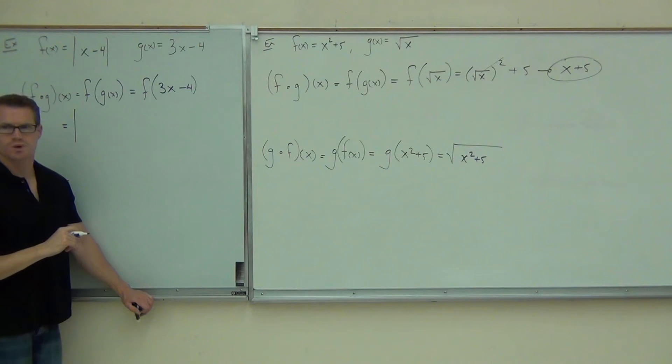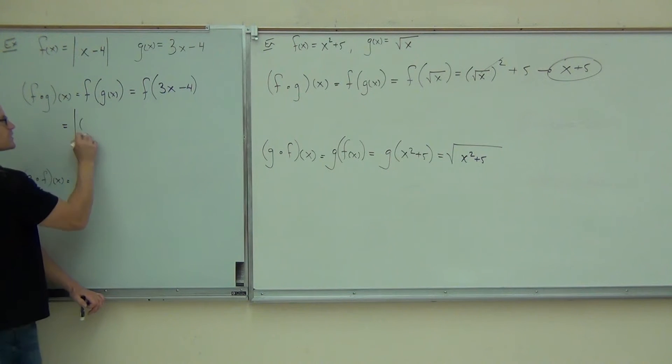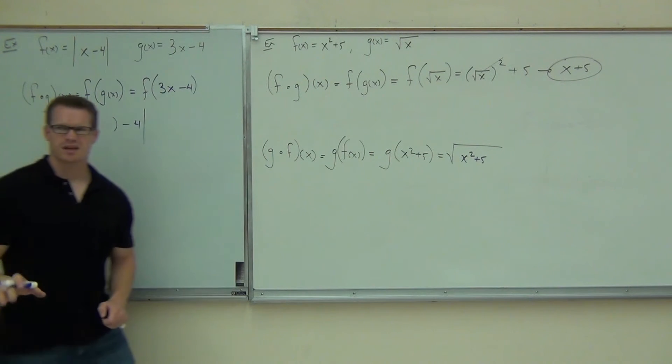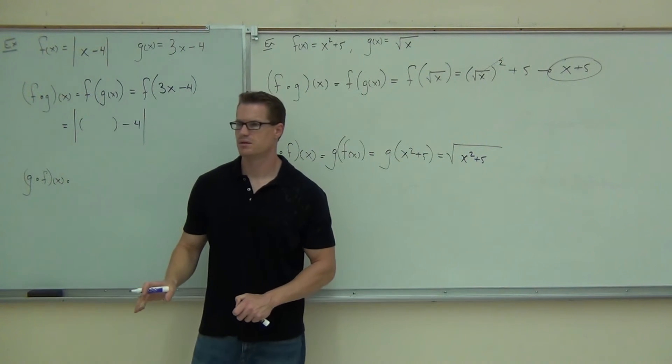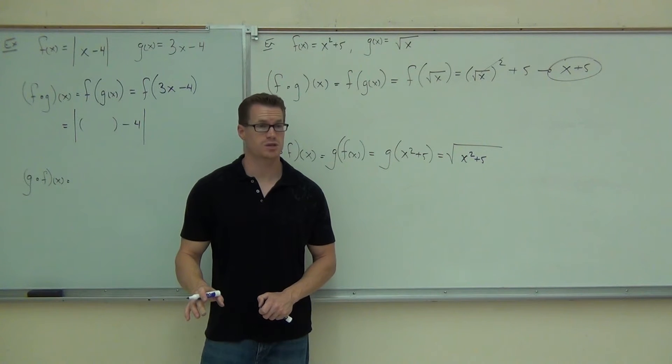x minus 4. Instead of x, you use what? Parentheses minus 4. You okay with that step? That's the big one, right? That's the big step. You see where it's coming from?